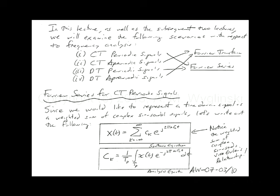We take x(t), integrate across one period, times e^(-j2πkf₀t) dt, then multiply by 1/Tₚ, and that gives us c(k). This second equation looks like some sort of correlation property. What I'm doing is taking x(t) and extracting just one sinusoidal term — the cosine and sine — that corresponds to c(k). I project x(t) onto that one waveform.